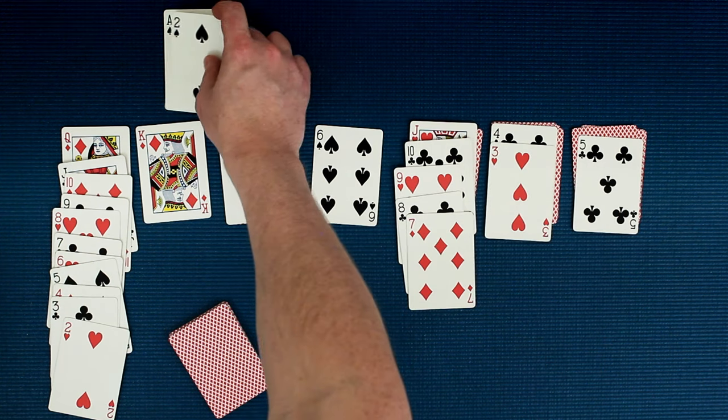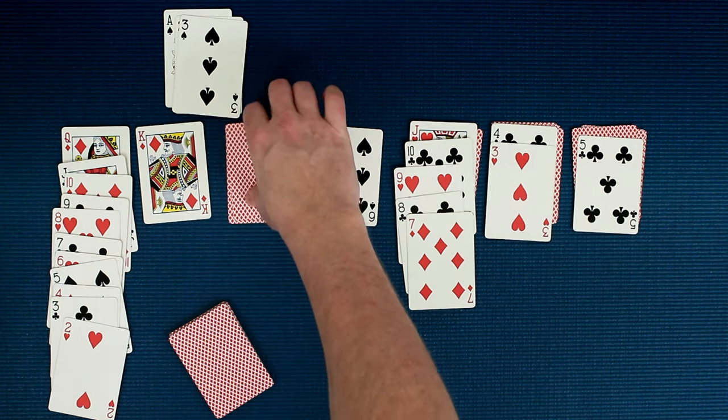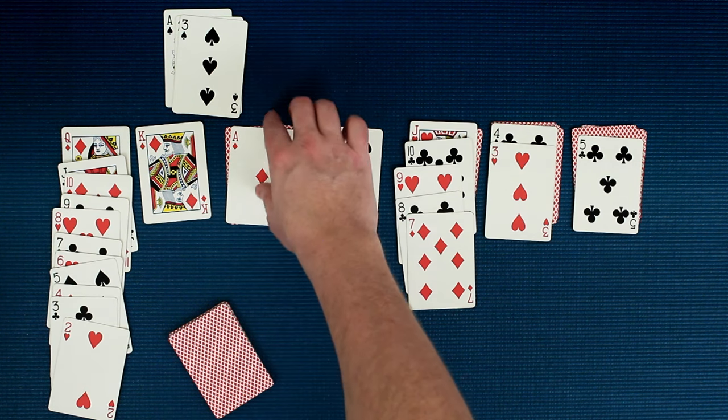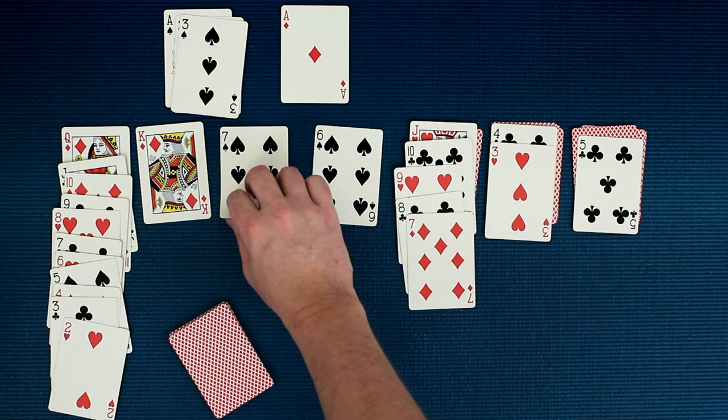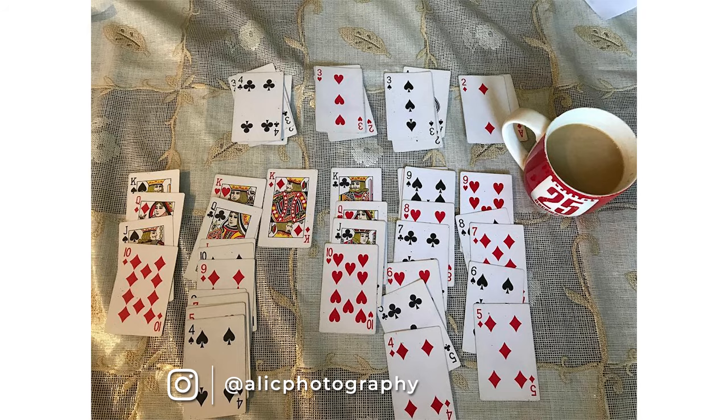So on this ace of spades, you could put the two of spades. And on the two of spades, you could put the three of spades. All the way up to king. For these piles up top, once you bring a card up here, you can't bring it back down again. They're out of play.